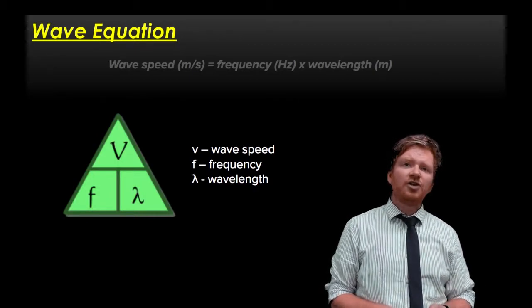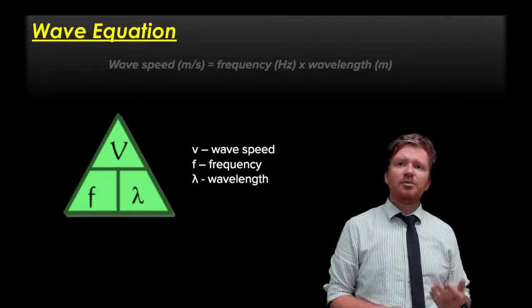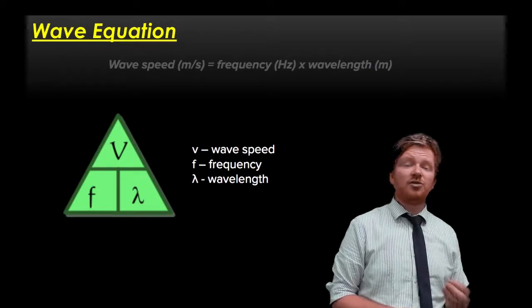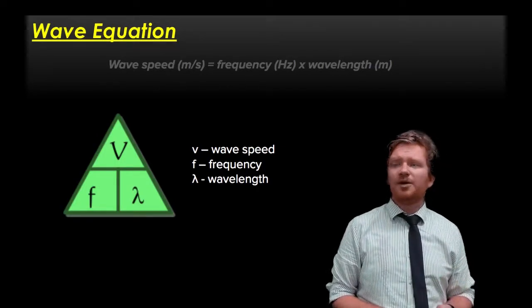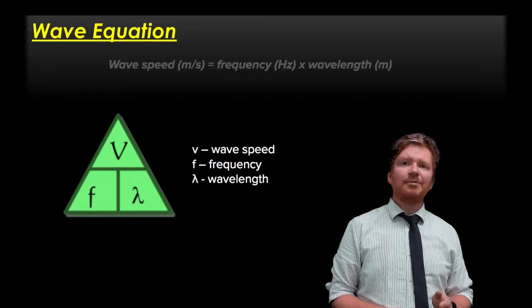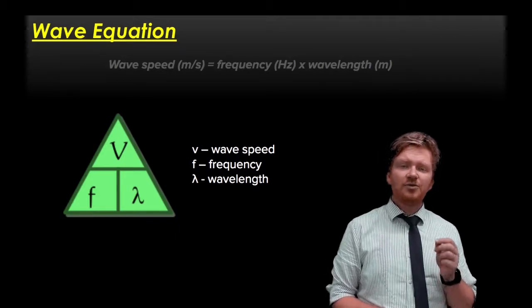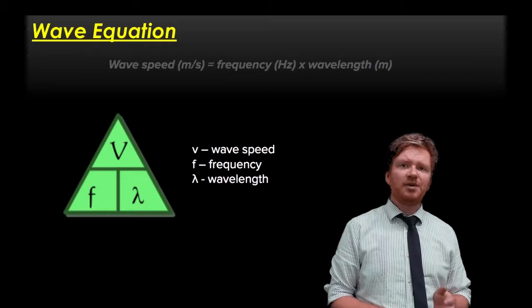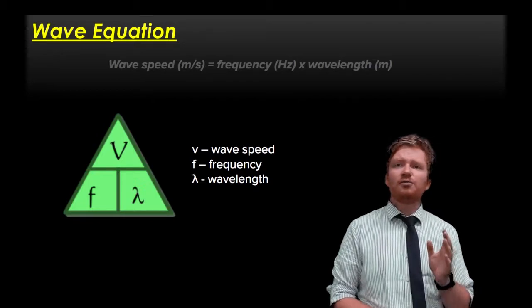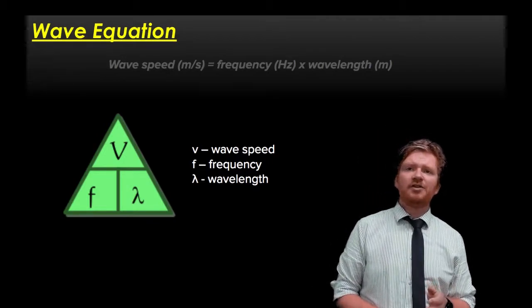We also talked a little bit about the wave equation. You should remember this from IGCSE as well, which is that the velocity of a wave, or the wave speed, is the frequency multiplied by the wavelength. You do have to remember these equations. It is a lowercase v for wave speed, lowercase f for frequency, and the Greek symbol lambda for wavelength. In order for this equation to work, wave speed must be in metres per second, the frequency must be in hertz, and the wavelength must be in metres.